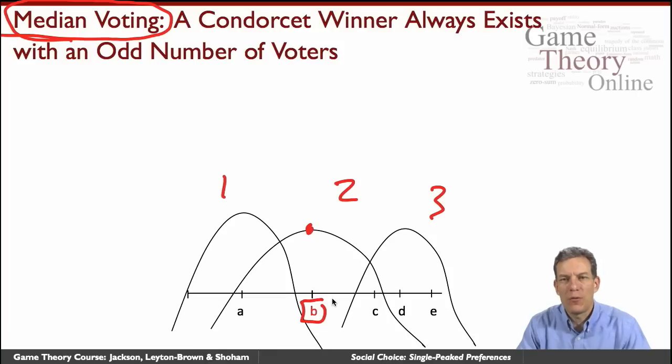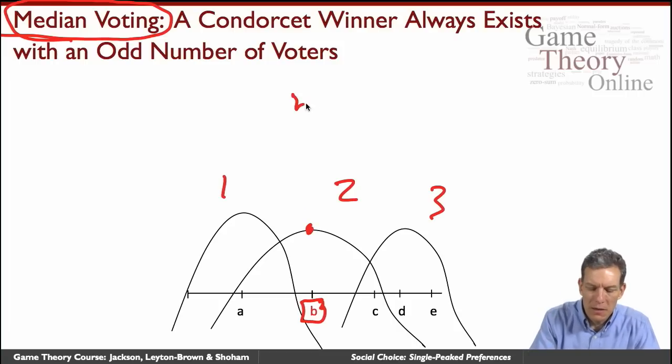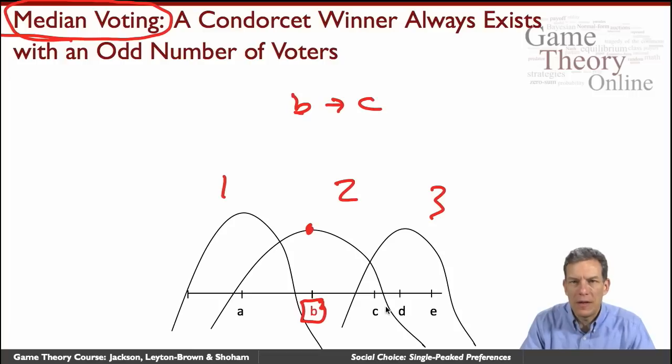And let's verify that this outcome B is actually going to beat everything in a pairwise comparison. So suppose we compare B to C. Well, both persons 1 and 2 like B better than C. They also like it better than D and E, right?